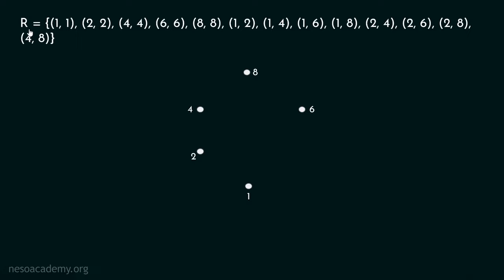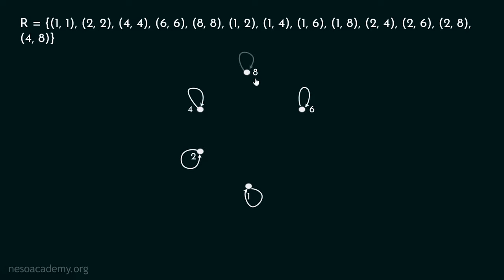We know that relation R consists of all ordered pairs (A, B) such that A divides B. Now, let's draw the directed graph. We know 1 is related to 1, 2 to 2, 4 to 4, 6 to 6, and 8 to 8 — every element is related to itself because of reflexivity. So we draw a self-loop from 1 to 1, from 2 to 2, from 4 to 4, from 6 to 6, and from 8 to 8. These are all the self-loops which must be present in the directed graph because R is reflexive.